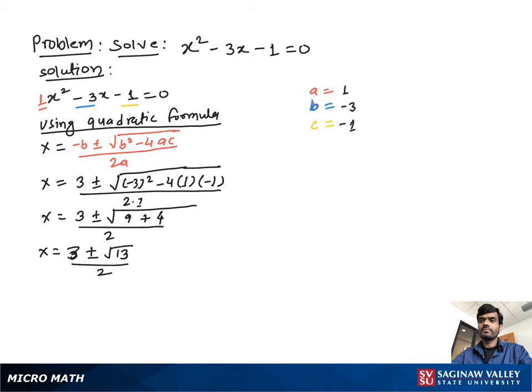So now we can write this into two parts: x is equal to 3 plus square root 13 over 2, or x equal to 3 minus square root 13 over 2. And this is our final answer.